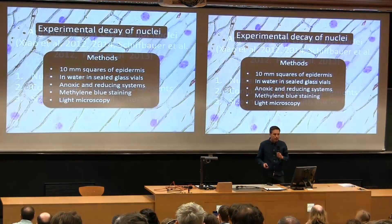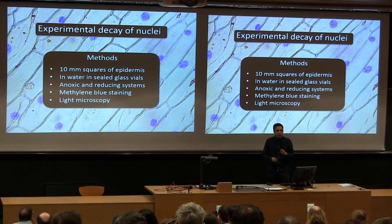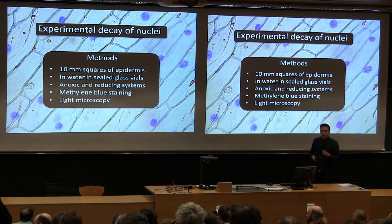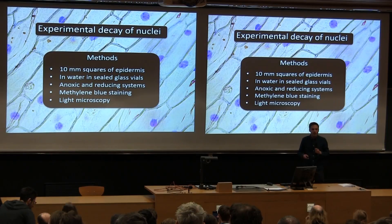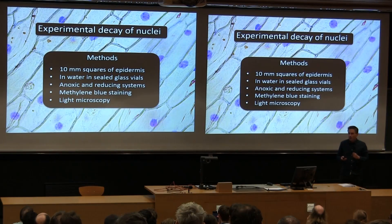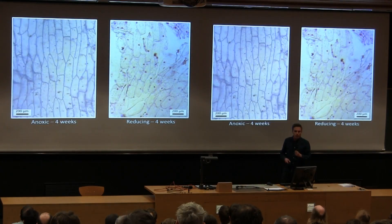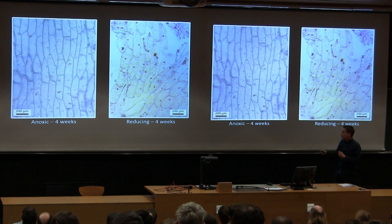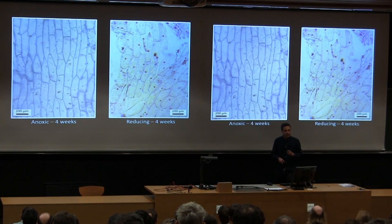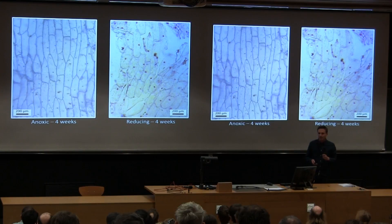The first thing I wanted to assess was the preservation potential of nuclei. To do this, I did decay experiments, and the model I chose was onions because it's very easy to image large numbers of nuclei using commonly available stains. This let me track the decay of these structures in different conditions. After a month, we could still see the nuclei present in these cells, and they survived at least another month.